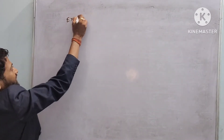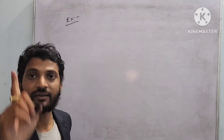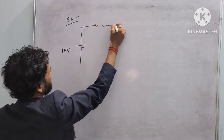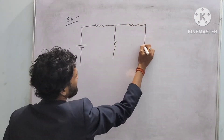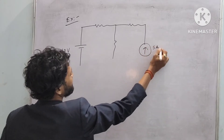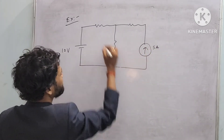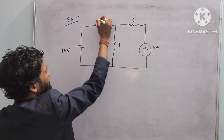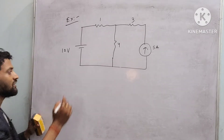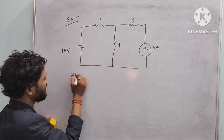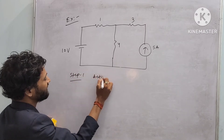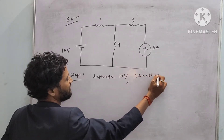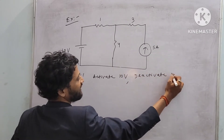Now we will solve another problem with one voltage source and one current source. Let we have a voltage source of 10 volt, a current source of 5 ampere, and three resistances: 1 ohm, 3 ohm, and 4 ohm. Step 1: we will activate the 10 volt source and deactivate the 5 ampere source.